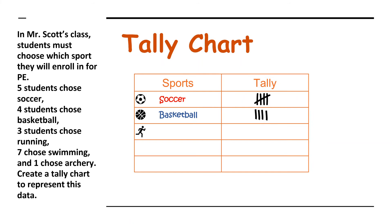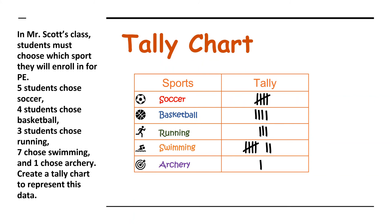Now we have running — three students chose running. Then we have swimming — five and two, so seven students chose swimming. And finally we have archery — only one student chose archery.